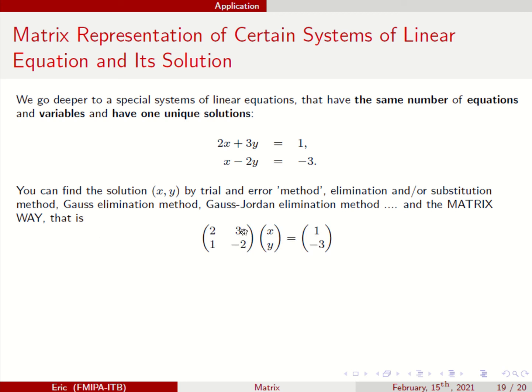So you have 2, 3, 1 minus 2, x, y, 1 minus 3. So I change this into matrix. Don't forget, this is 2x plus 3y equals 1. This is the same. And x minus 2y becomes minus 3.